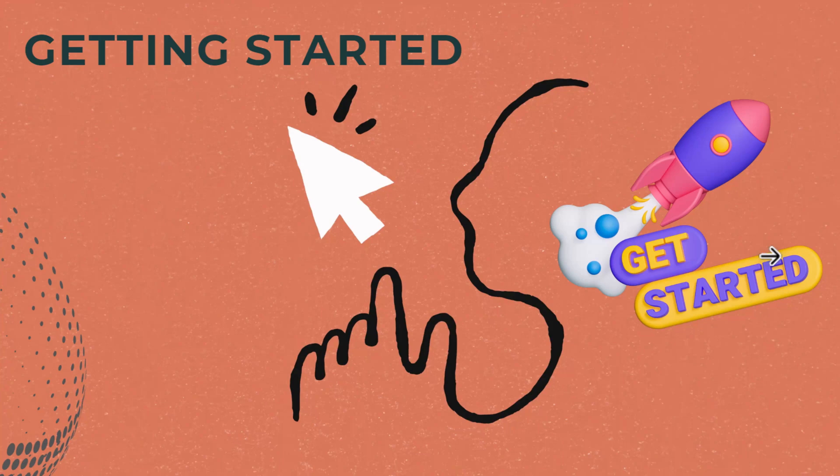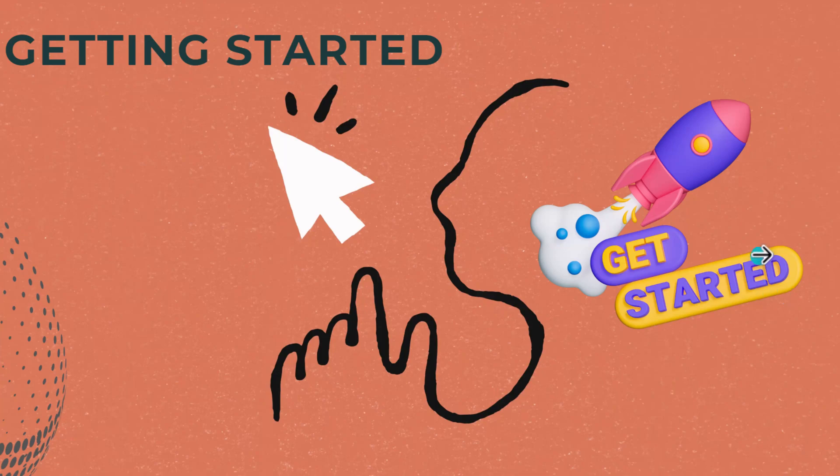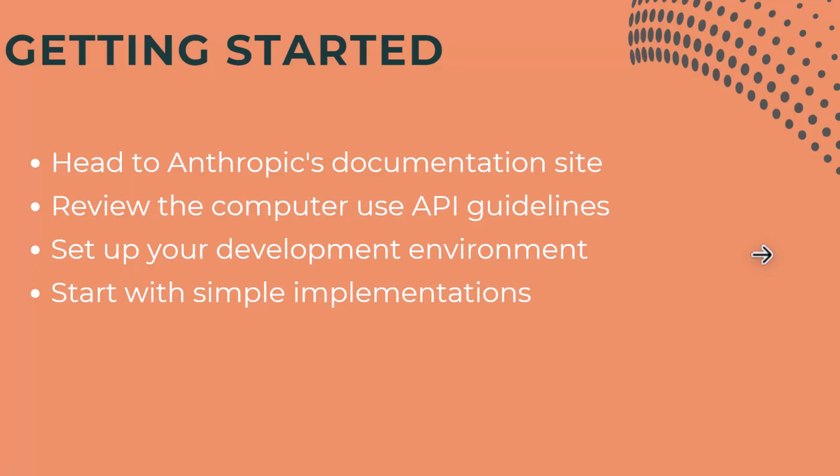How to get started: one way is consuming it through an API. Head to Anthropic's documentation site — the link is in the description. Review the computer use feature API guidelines, set up your dev environment. If you are a Python fan you can use Python code, or you can use TypeScript or PowerShell. Start with simple implementations and always check the official documentation for the most up-to-date information.